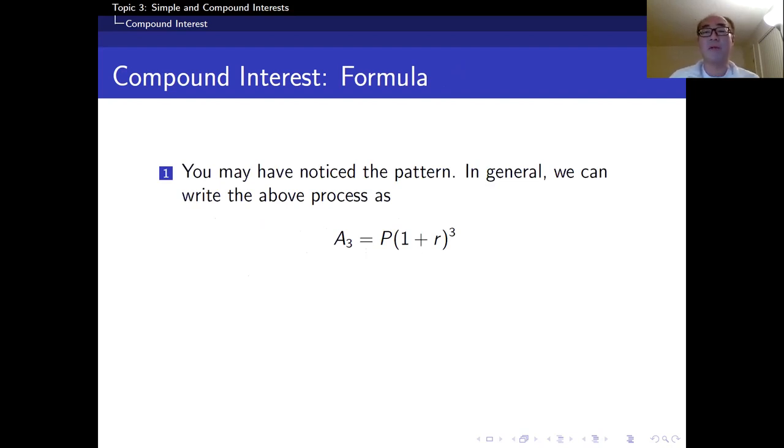Actually, I can simplify the process. This is the formula for this case: A sub 3 equals P times (1 + r) to the power 3. That's the formula. Later we're going to see a more general formula. For any years t, we just replace 3 by t. So A sub t equals P times (1 + r) to the power t.